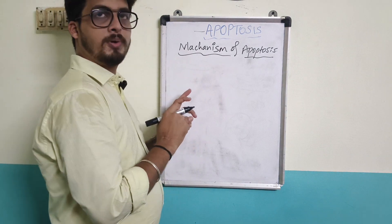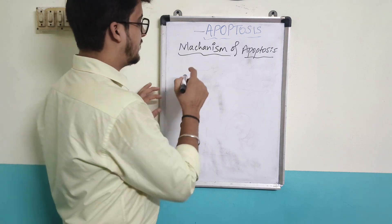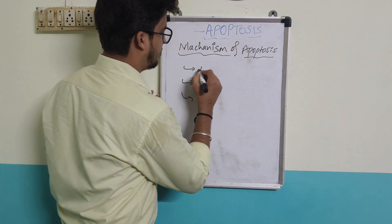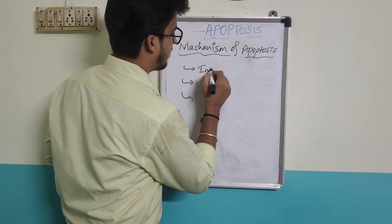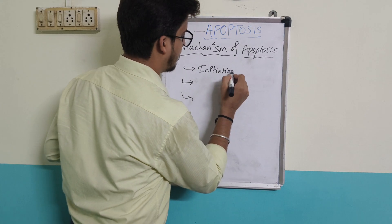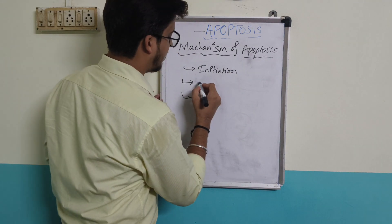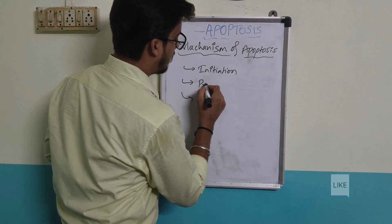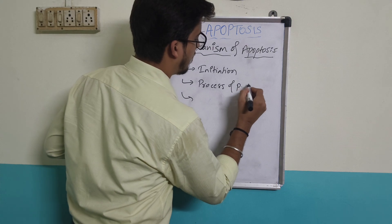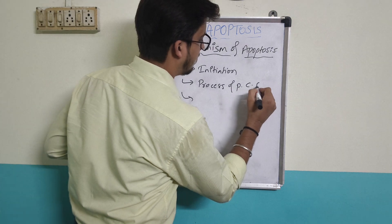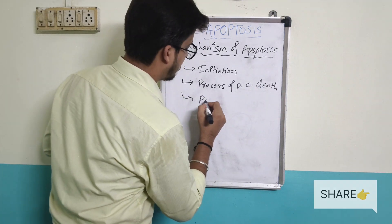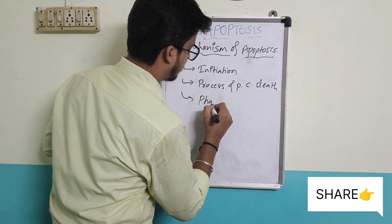Next is the mechanism of apoptosis. The mechanism involves three steps: first is initiation, second is the process of programmed cell death (execution), and third is phagocytosis.